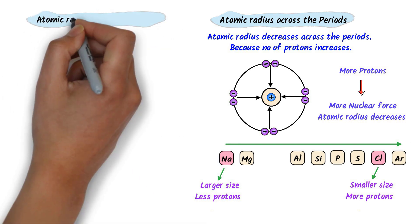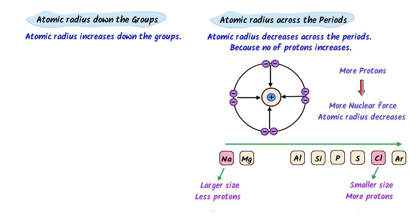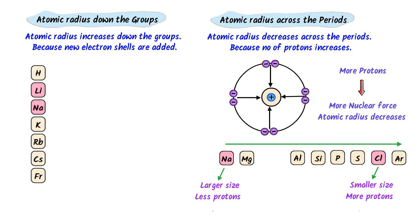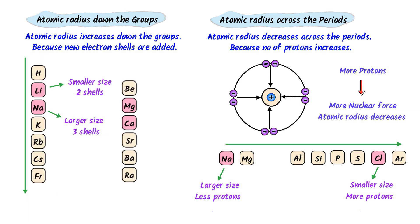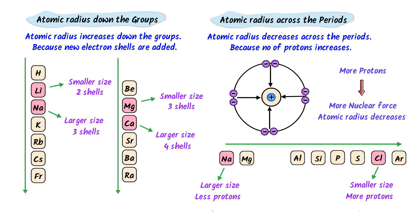Now we will learn atomic radius down the group. Remember that atomic radius increases down the group because new electron shells are added, and as a result the size of the atom increases. Consider the first group — lithium has smaller size than sodium because lithium has two electron shells while sodium has three. In the second group, magnesium has fewer electron shells while calcium has more. Therefore, atomic radius decreases across the period and atomic radius increases down the group.